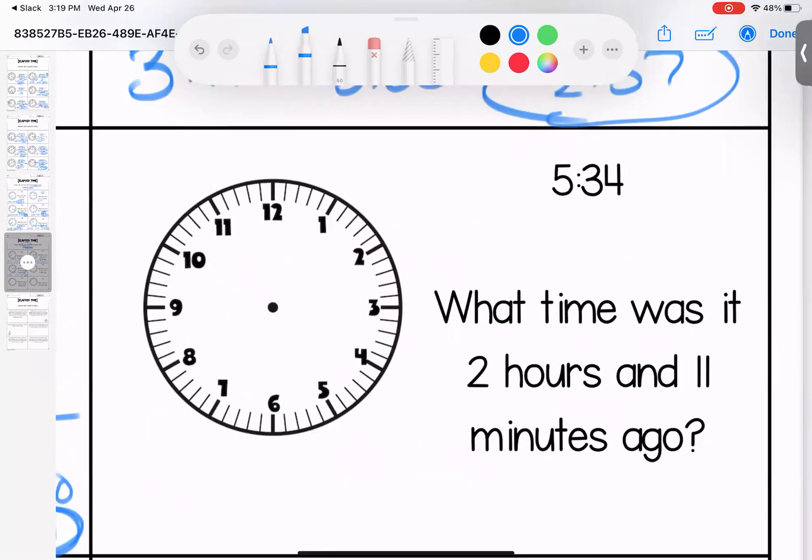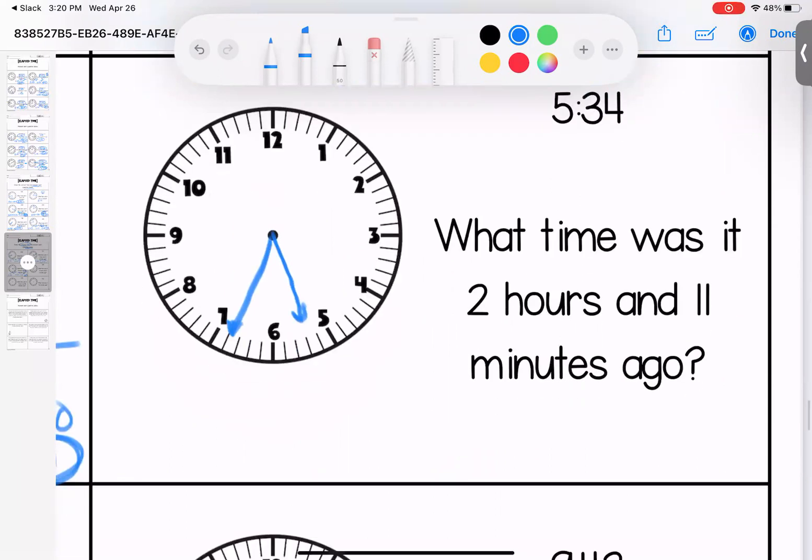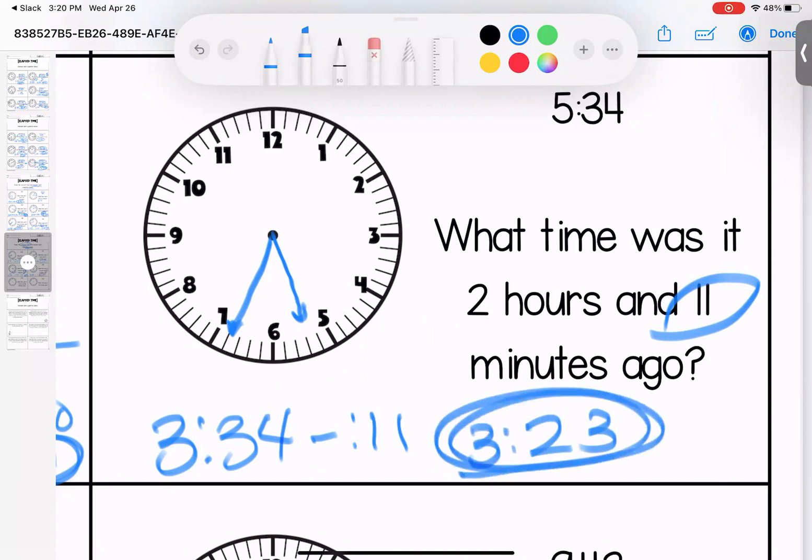Over here, it's 5:34. Two hours and 11 minutes ago. So 5:34 minus two hours is 3:34, and then we need to take off 11 minutes. 34 minus 11 is 23, so 3:23.